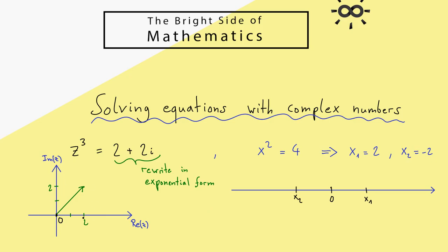We describe our complex number with two things: first the distance from 0, which is the absolute value, and second the angle from the x-axis to the vector itself. To calculate these, draw the right-angle triangle. Use the Pythagorean theorem to calculate the length, and a trigonometric function — most often the tangent — to calculate the angle phi using the y and x coordinates.